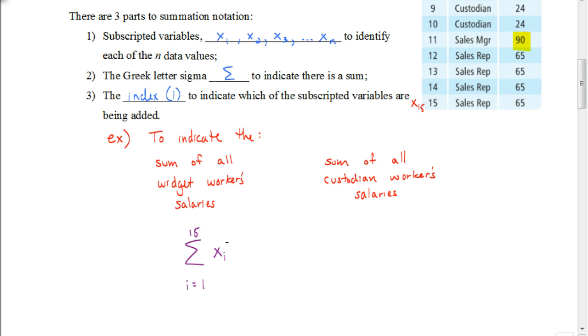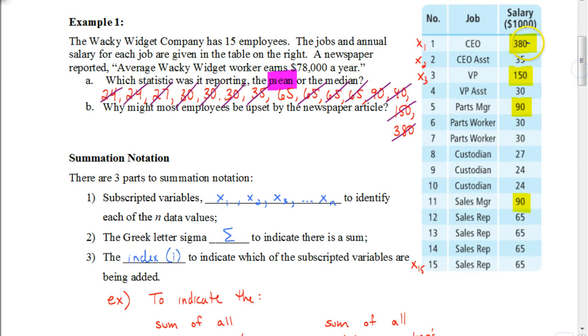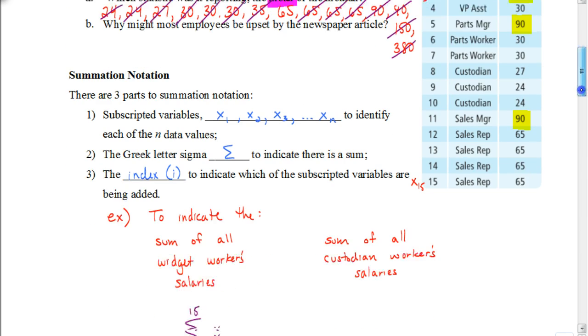So the i equals 1 means that our index is starting with the first. The number above the sigma is referring to the number in the set that we're going to end with. And this just tells us, identifies what subscripted variables we're going to be using. So I could replace i with 1, i with 2, i with 3, all the way up to the 15th value. So again, this is finding the sum from the first term to the 15th term. So if I saw this problem in my assignment and said find this value, what I would do is I would go over here and I would add up all of these numbers together. Now it's not asking us to find the average. It's just asking us to find the sum of all of those salaries.